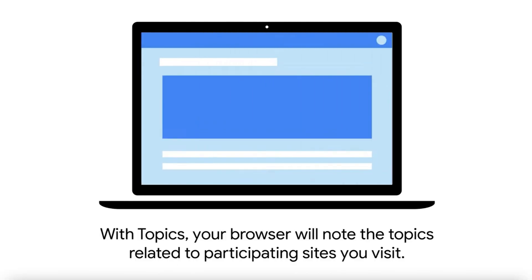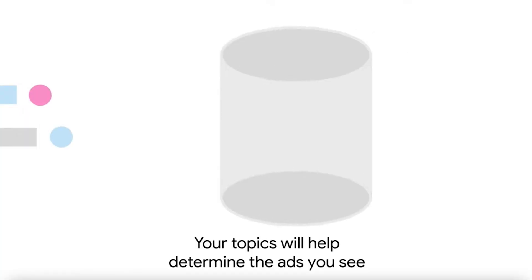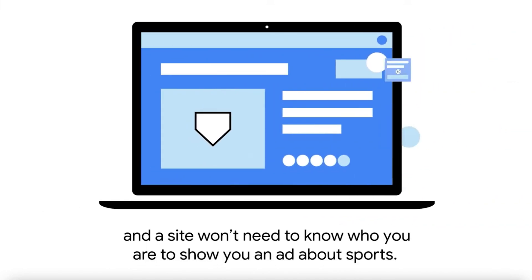That's what it is. So how does it work? This is the process as it stands. Your browser will take note of the topics of the sites that you visit. So you might visit websites that are about music or fashion, or in the example Google uses, sports. If you visit a lot of sports sites, then topics will infer that you like sports. Then you can be shown ads about this topic without the site ever needing to know who you are. All they really need to know is that you're interested in sports.